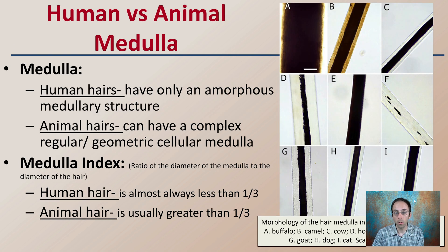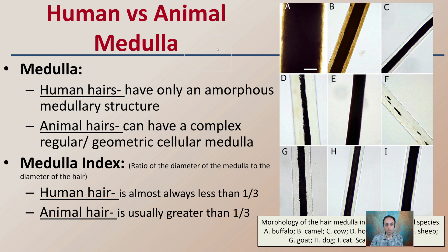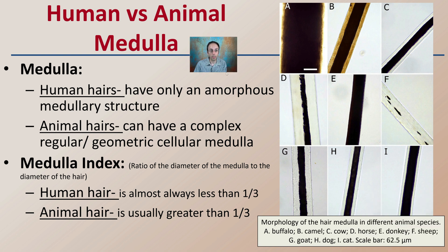Now looking at the medulla region — the microscopic view of comparing these hair types. Human hairs only have an amorphous medulla structure, while animal hairs can have a complex, regular, geometric cellular medulla. For the medullary index, which is the ratio of the diameter of the medulla to the diameter of the actual hair, human hair is almost always less than one-third, and animal hair is usually greater than one-third.